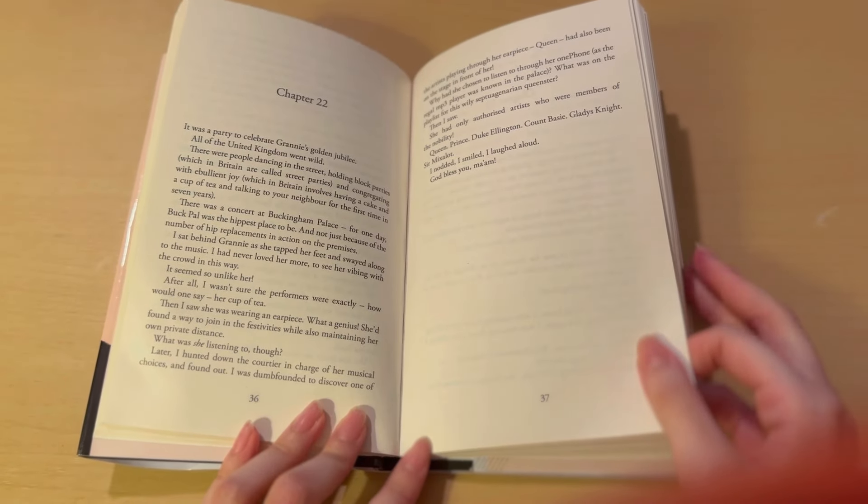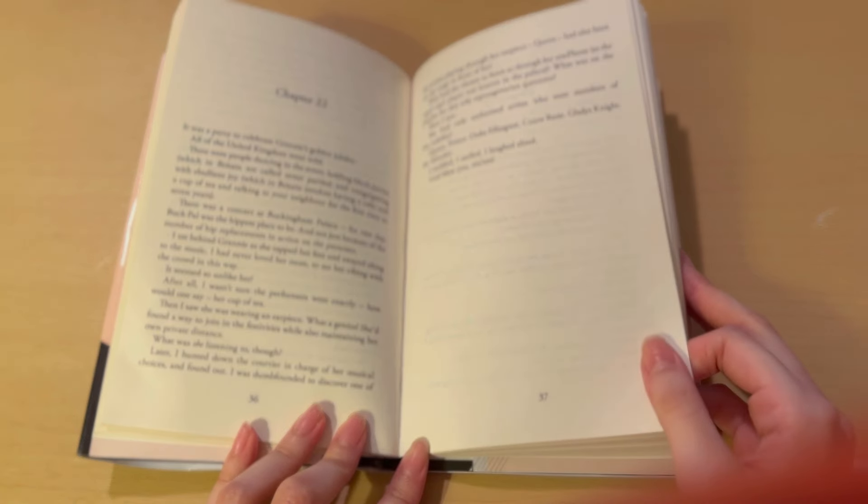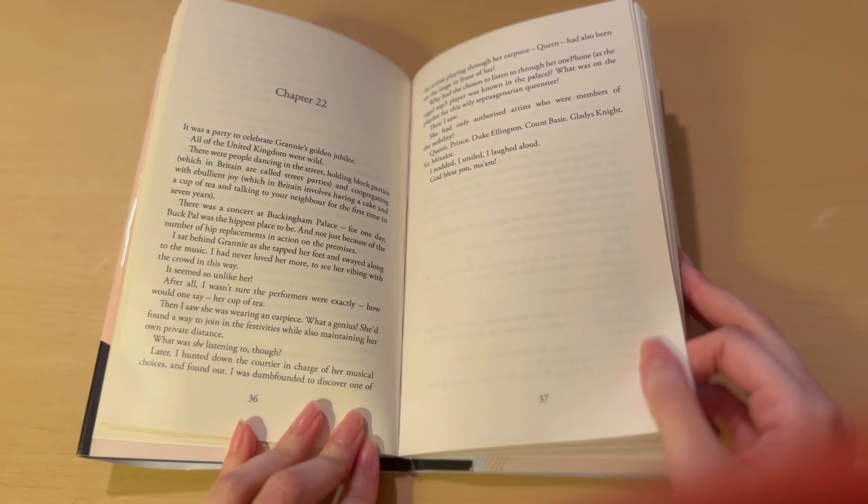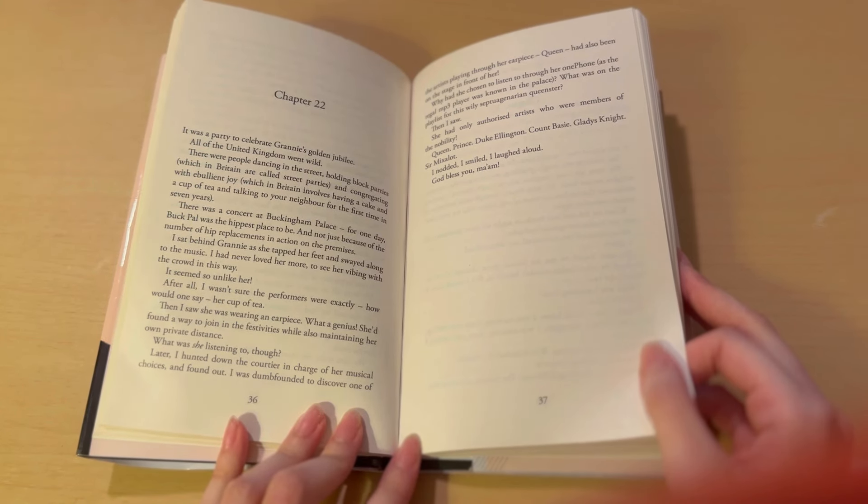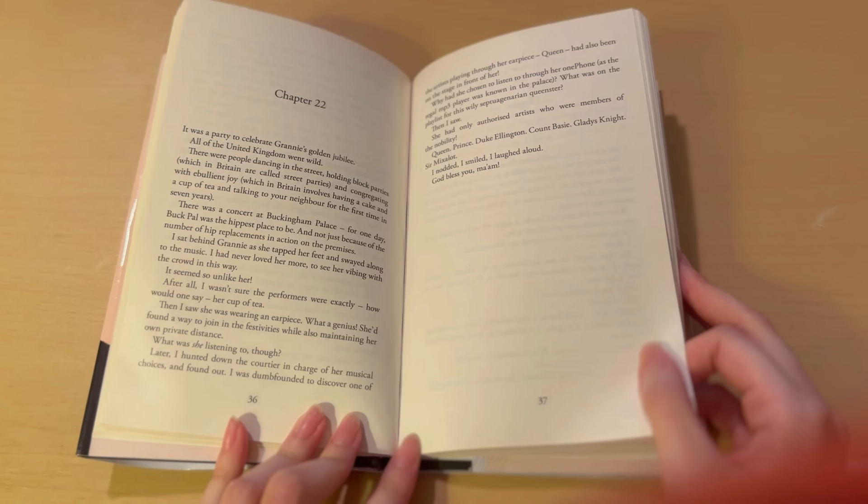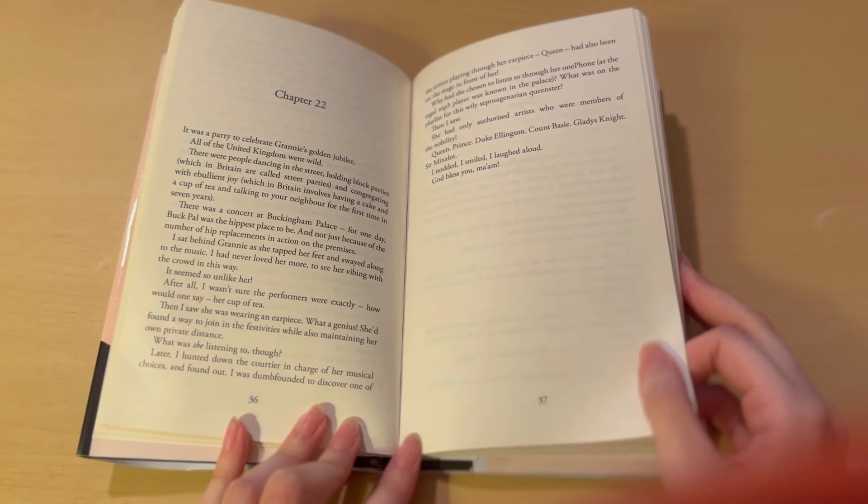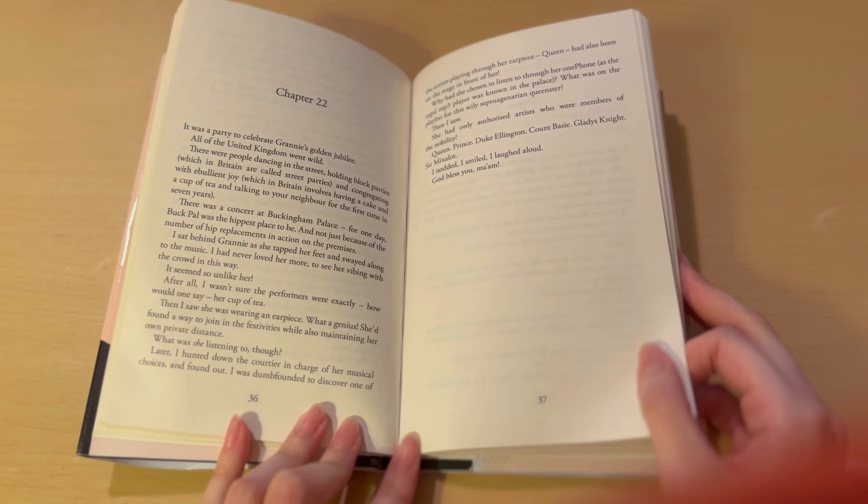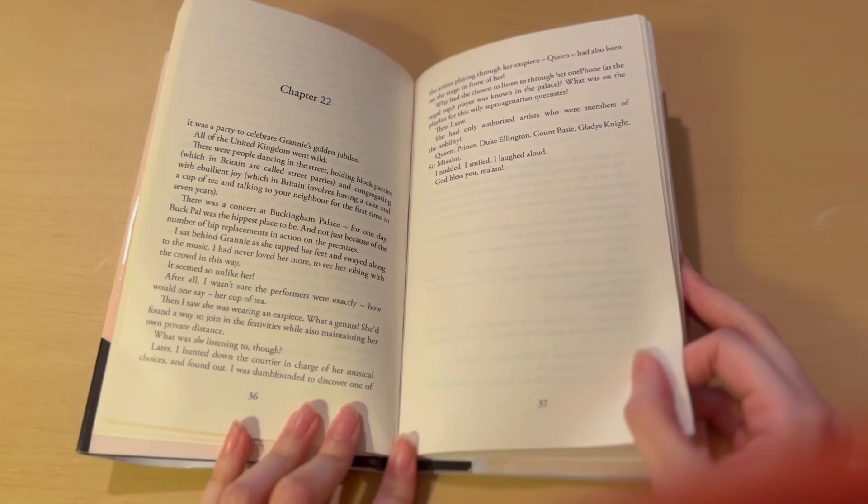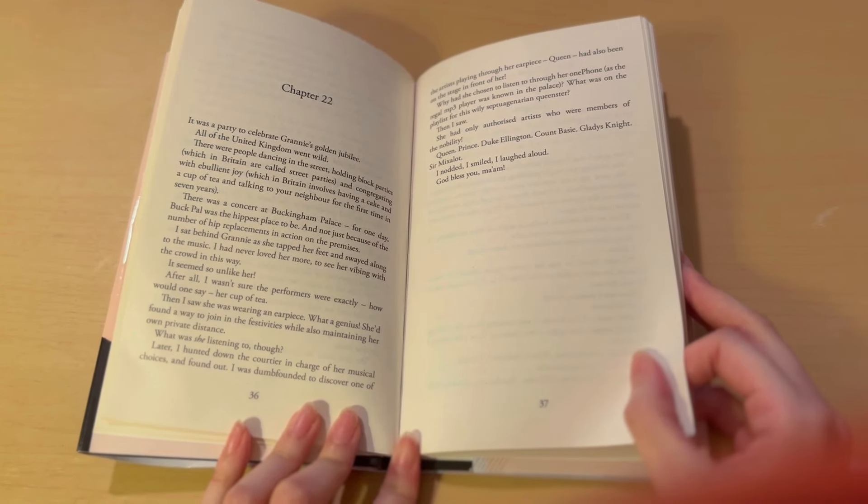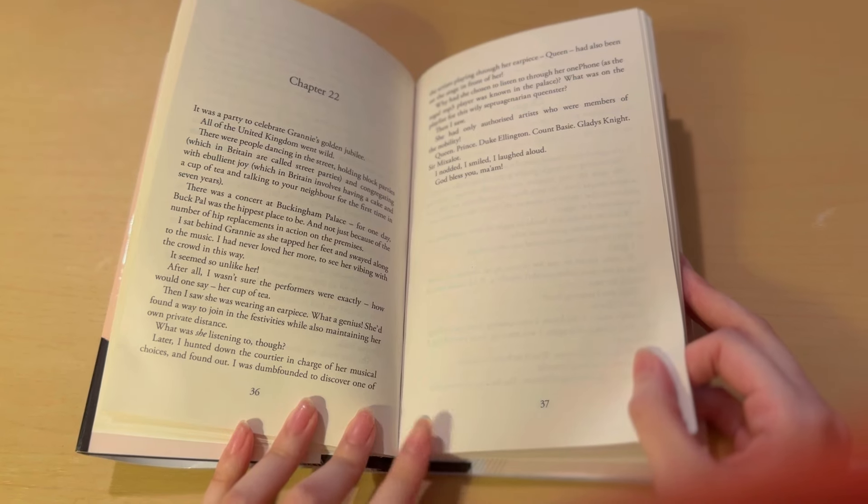Chapter 22. It was a party to celebrate Granny's Golden Jubilee. All of the United Kingdom went wild. There were people dancing in the street, holding block parties, which in Britain are called street parties, and congregating with ebullient joy, which in Britain involves having a cake and a cup of tea, and talking to your neighbor for the first time in seven years. There was a concert at Buckingham Palace. For one day, Buck Pal was the hippest place to be, and not just because of the number of hip replacements in action on the premises.